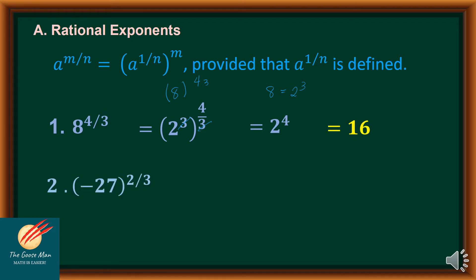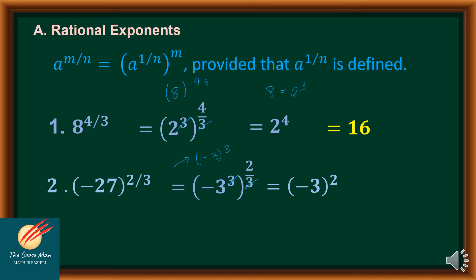Let's have another example. If I have negative 27 raised to 2 over 3, note that negative 27 is negative; therefore, I can express this as negative 3 to the 3rd power. So this expression is now negative 3 to the 3rd power raised to 2 over 3. I can factor out 3 and 3, resulting in negative 3 squared. But negative 3 squared equals negative 3 times negative 3, which is positive 9.